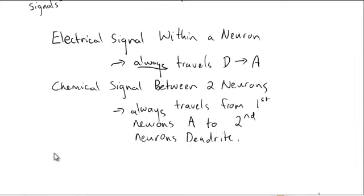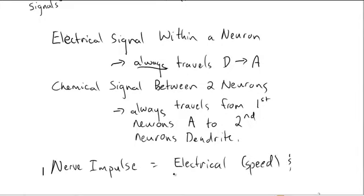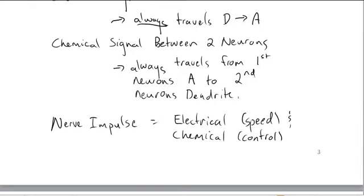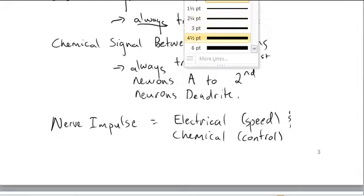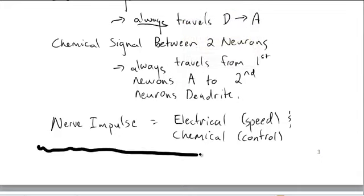So essentially, a nerve impulse has two components. Electrical, which allows for speed, and chemical, which allows for control. And that's the end of part one, mandatory. If you have any questions, please come see me. Otherwise, have a good day, and I'll see you in class.